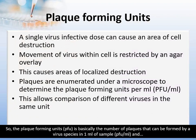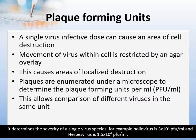The plaque forming unit or PFU is basically the number of plaques that can be formed by a virus species in one milliliter of sample, and the unit is PFU per ml. It determines the infectivity of a single virus species. For example, poliovirus is 3 × 10⁶ PFU/ml and herpesvirus is 1.5 × 10⁶ PFU/ml.